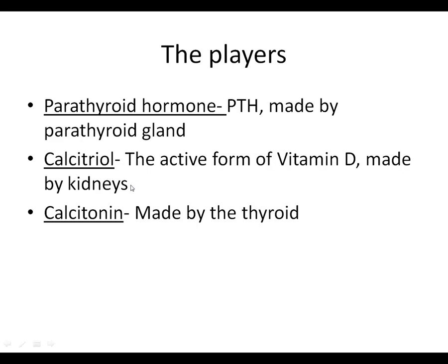Calcitriol is the active form of vitamin D. Unlike most hormones, which are usually small peptides made and released into the bloodstream, calcitriol is unusual because it's actually a modified form of cholesterol — it's a lipid. The active form of vitamin D is synthesized from a precursor stored in adipose tissue and the liver, and the synthesis of calcitriol actually happens in the kidneys. Calcitonin is a traditional peptide hormone released from the thyroid.